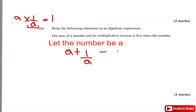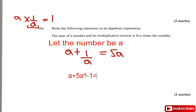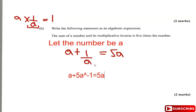So the sum of a number a and its multiplicative inverse 1 over a is equal to 5 times the number, which is 5a. So we write: a plus 1 over a equals 5a. Another way to write that is a plus a to the minus 1 equals 5a.